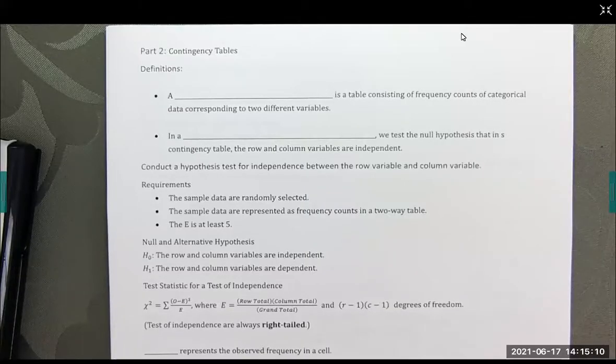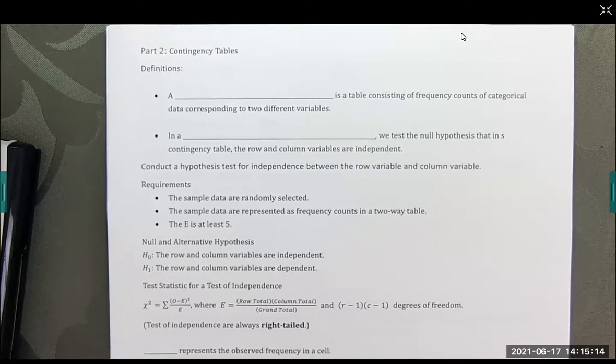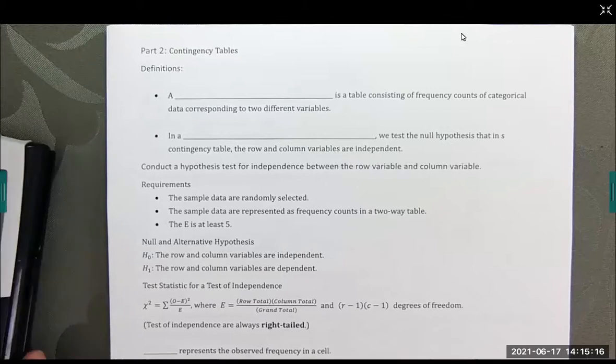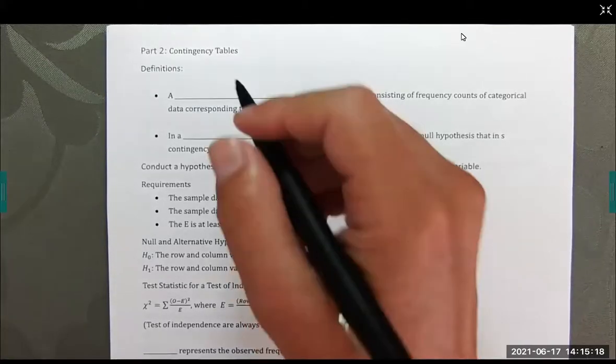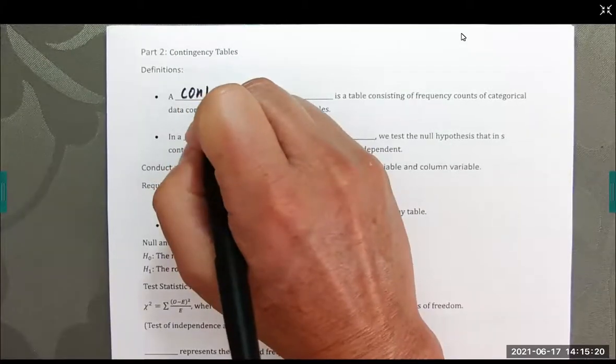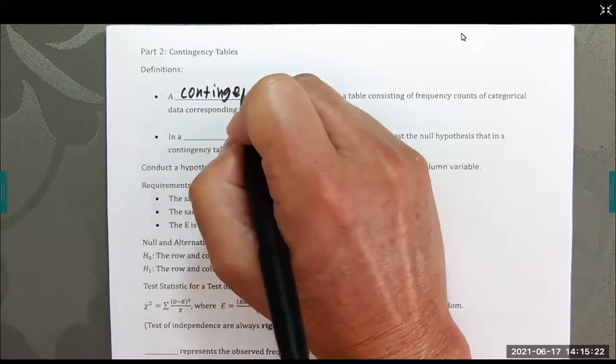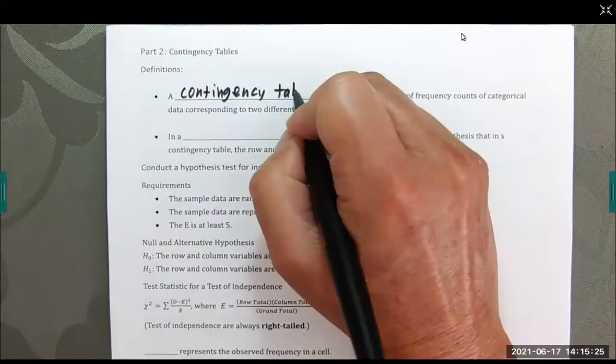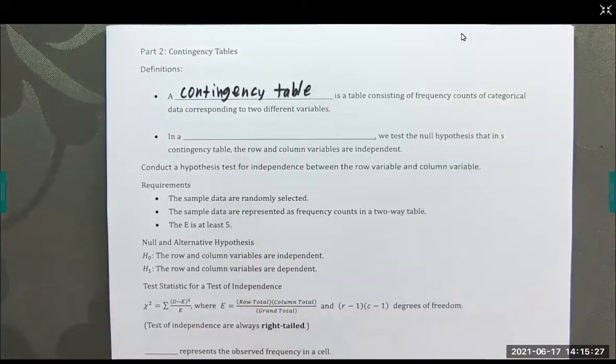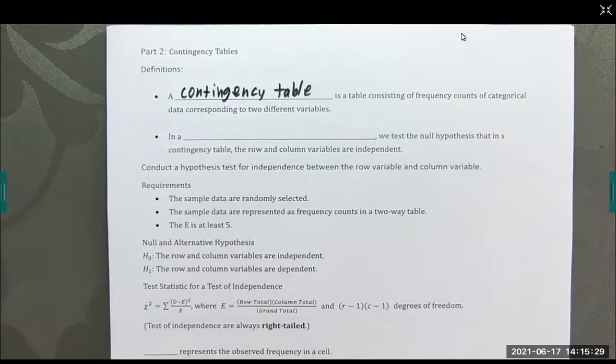Welcome back. We are to Chapter 11, Part 2, Contingency Tables. Let's start off by what we mean by that contingency table. This table consisting of frequency counts of categorical data corresponding to two different variables. And we'll see lots of examples of that by the end of this video.